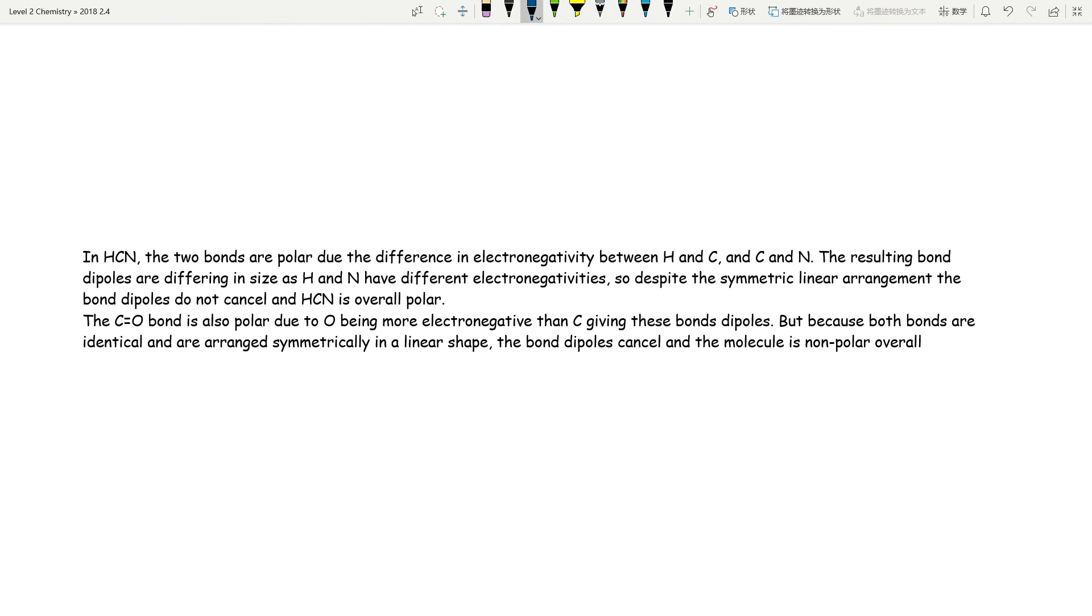So you can imagine if the carbon in the middle is experiencing two different types of dipoles around it, it's obviously not going to cancel out. If it doesn't cancel out, it is polar. If you compare that with CO2, the two CO bonds are completely similar and they will cancel each other out because of the symmetrical arrangement.